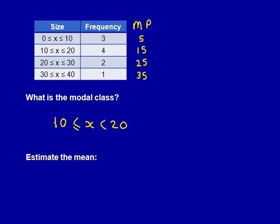And finally, the midpoint of the last group, 30 to 40, is 35. We put a big cross at the bottom of this column to stop us adding it up.